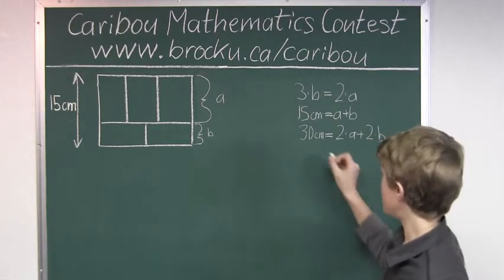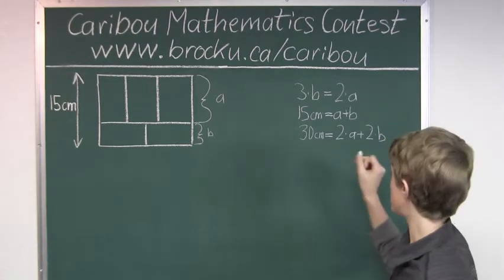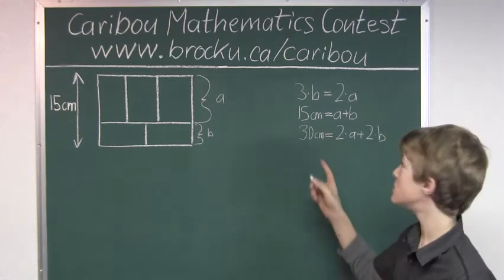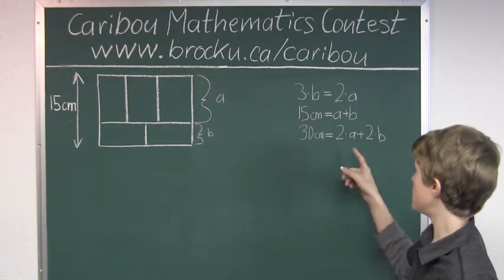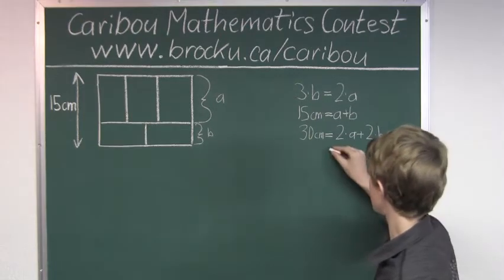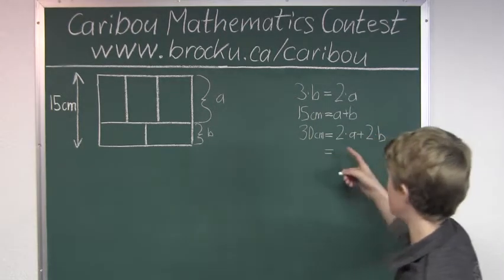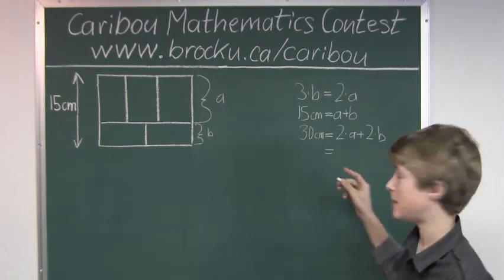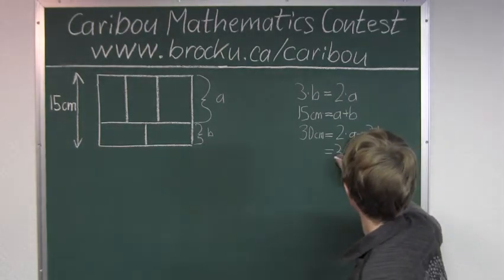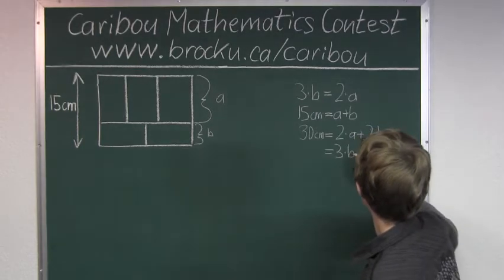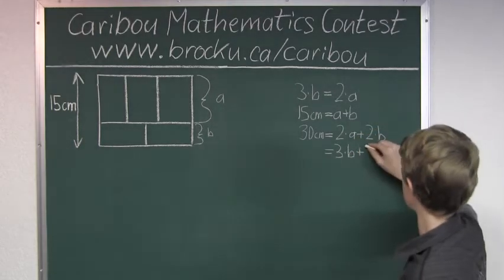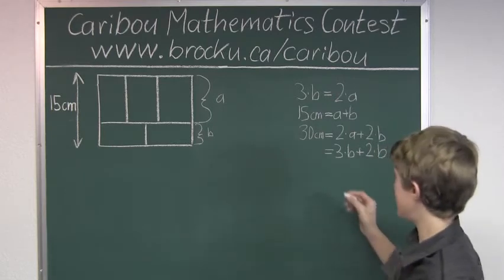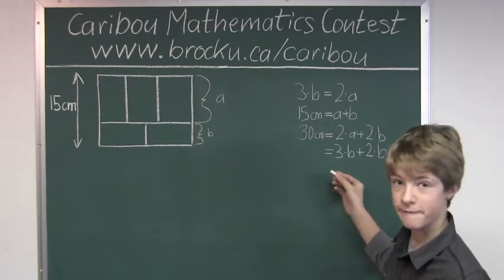So if we know that 30 centimeters equals two times a plus two times b, then we can substitute the three times b for the two times a. So then we would have three times b plus two times b, and that would be five times b.